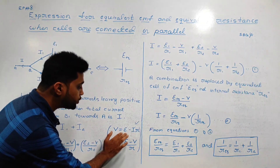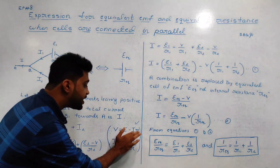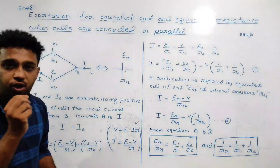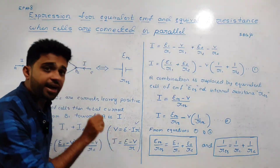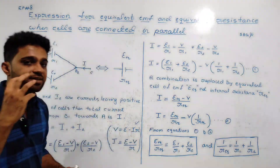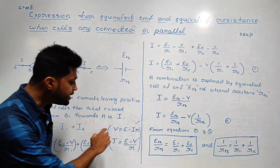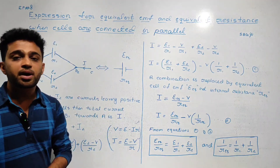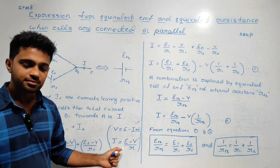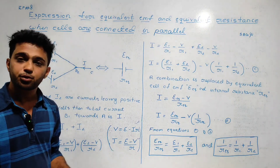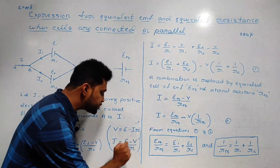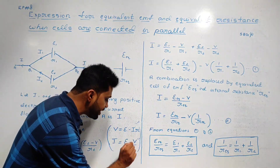From the previous class, the equation is: V is equal to E minus I·R, where V is the potential difference across the cell, E is the EMF of the cell, I is the current, and R is the internal resistance. Rearranging for current: I is equal to (E minus V) divided by R.